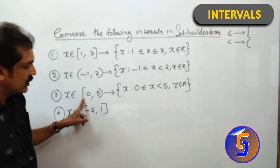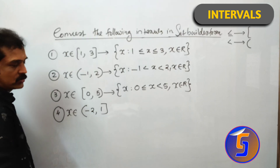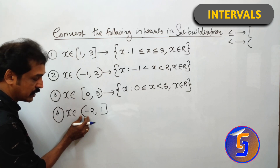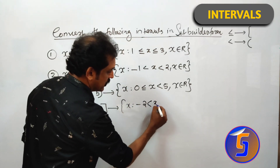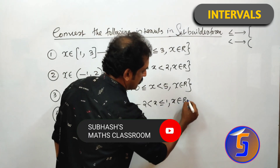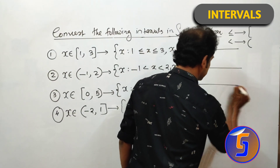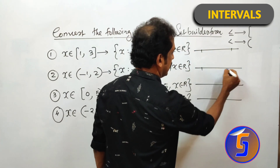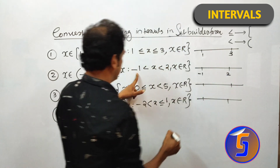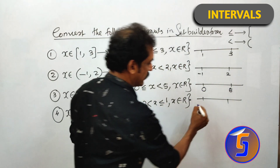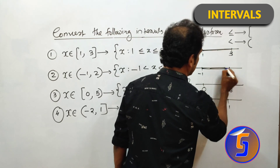x element of semi-open (-2, 1] — starting with open means simple bracket, semi-open. That is: set of all x such that -2 < x ≤ 1, x element of R. These are the four types of conversions. If less than or equal to, it's bold on the number line; if strictly less than, it's round.